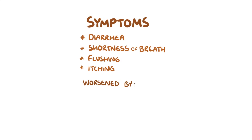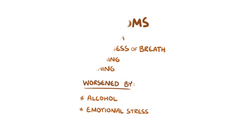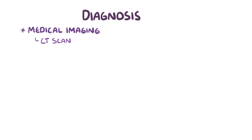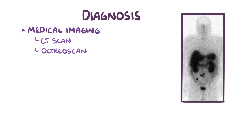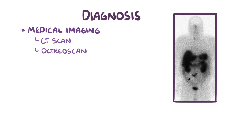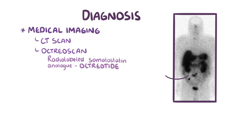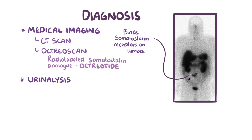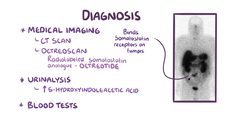These symptoms can be worsened by alcohol or emotional stress, since these can further stimulate the neuroendocrine cells. Diagnosis of carcinoid syndrome can be made through medical imaging, like a CT scan. Also, something called an octreoscan can help identify carcinoid tumours — they inject a radio-labelled somatostatin analogue called octreotide, and this binds to the increased number of somatostatin receptors on tumour cells. There's also urinalysis, which shows increased levels of 5-hydroxyindolacetic acid, while blood tests can show niacin deficiency.